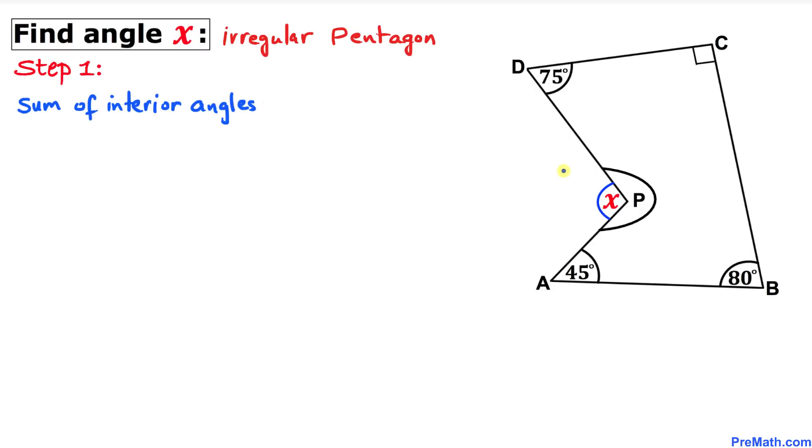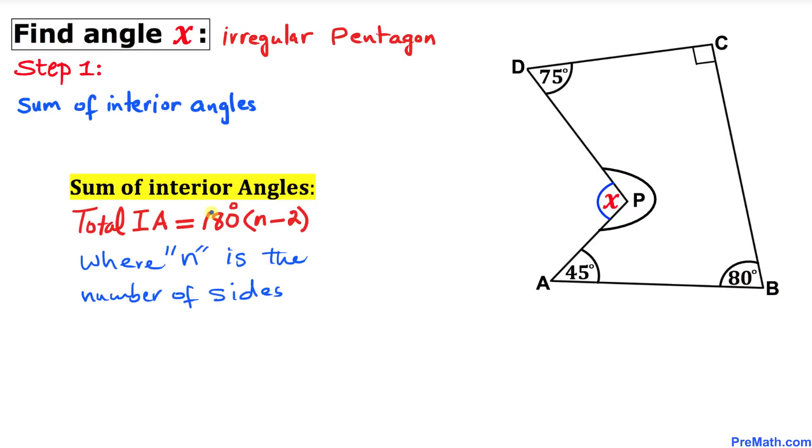Let's talk about the sum of interior angles of this polygon. Here's the sum of interior angles formula: total interior angles equal 180 degrees times (n - 2), where n is the total number of sides. Since we're dealing with a pentagon, our n value is 5.